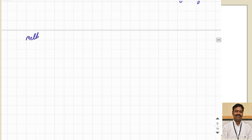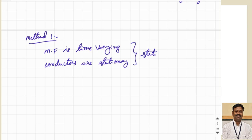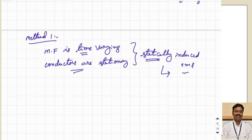The first method: the magnetic field is time-varying and conductors are stationary. This leads to statically induced EMF. The name tells us — statically induced EMF — because in this case the conductors are stationary and the magnetic field is time-varying, so the rate of change of flux linkages causes the EMF to be induced. This principle is used in transformers, which we have already discussed.